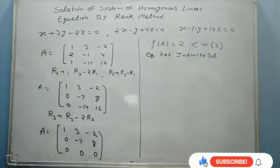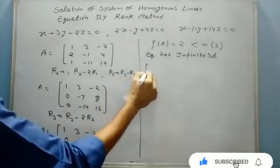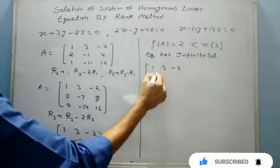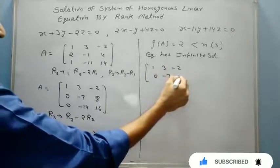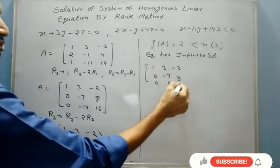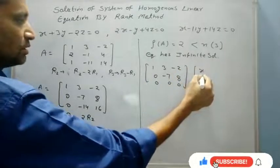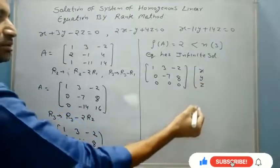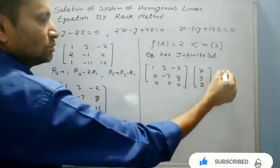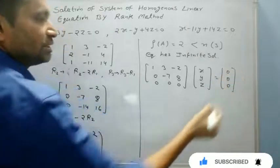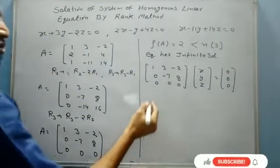Now I will say the equation has infinite solutions. For infinite solutions, we will take 1, 3, minus 2, 0, minus 7, 8, 0, 0, 0 with the variables x, y, z equal to the constant values. Now I will use matrix form.